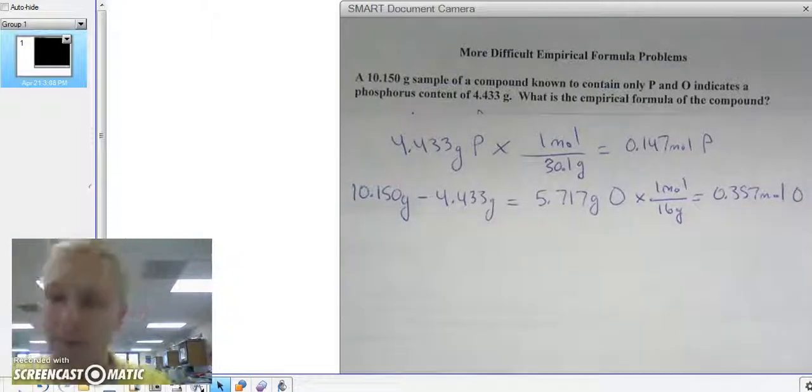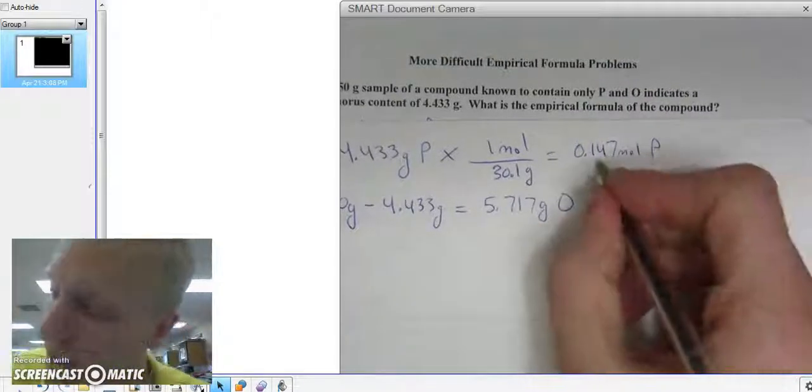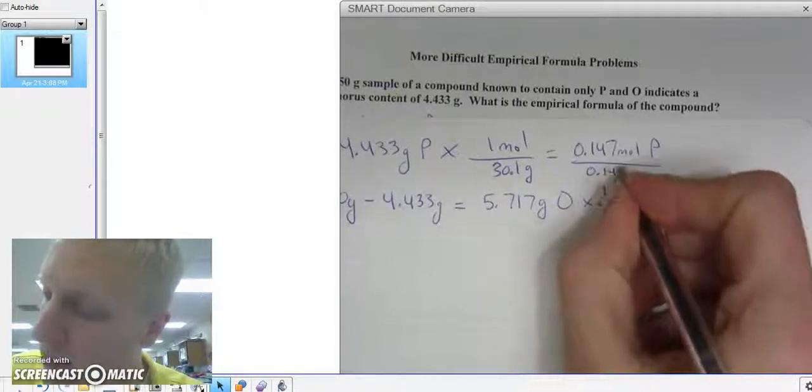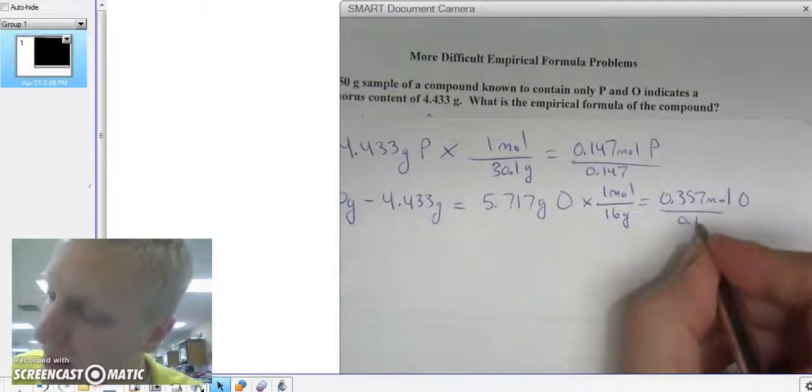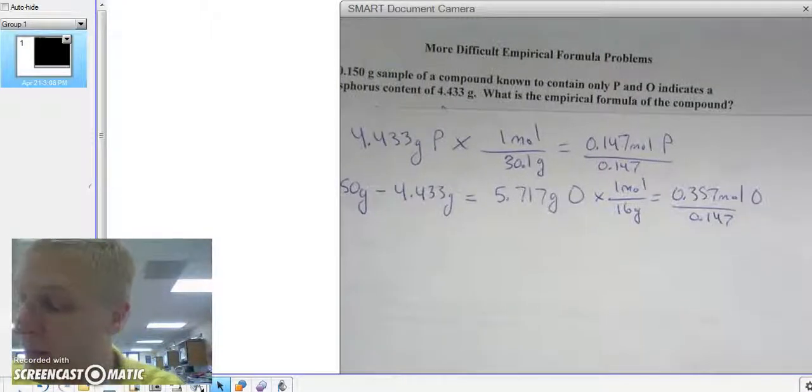I want to find the lowest whole number mole ratio. In order to do that, I have to divide by my lowest answer. In this case, 0.147 looks like my lowest answer, so I divide both of my moles by my lowest answer.